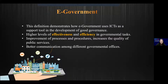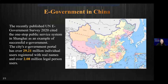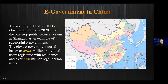Besides, e-government will bring better communication among different departments. As for e-government in China, the recently published United Nations e-government survey cited the one-stop public service system in Shanghai. The Shanghai government portal has almost 30 million users and over 2 million legal person users, so the level of e-government in China is pretty advanced.